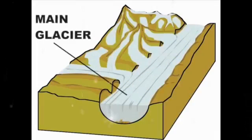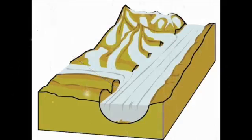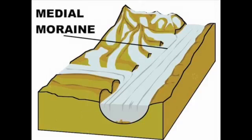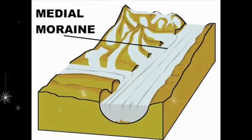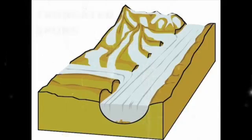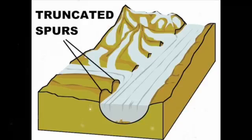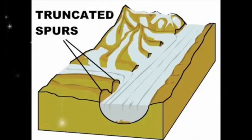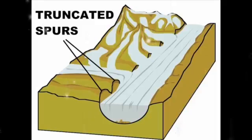The main glacier is the largest flowing area of the glacier. When a small tributary merges with the main trunk glacier, the debris on the lateral moraines becomes lines of material carried along in the main glacier, known as medial moraine. Truncated spurs can be seen where hillsides are bisected by the glacier as it cuts away layers of rock and surface soil moving downhill.